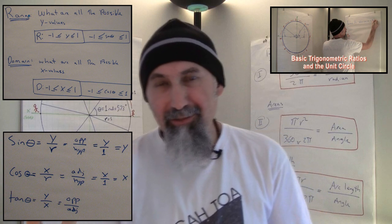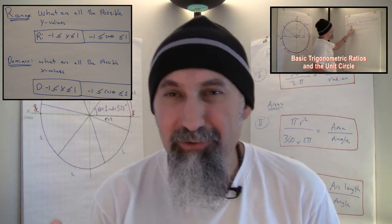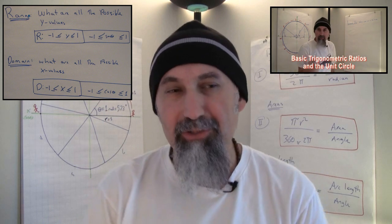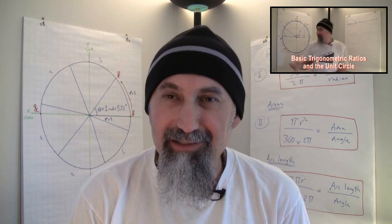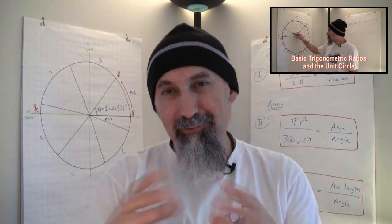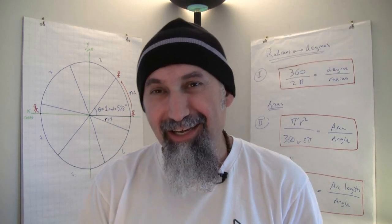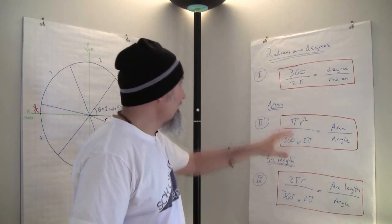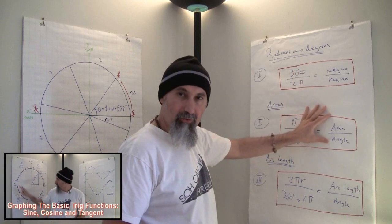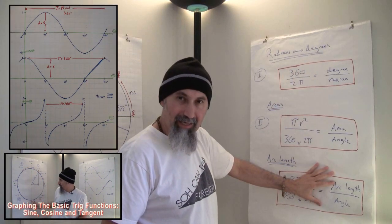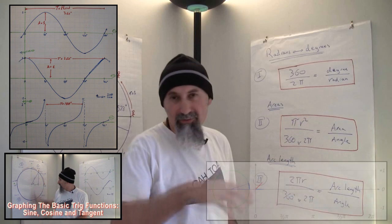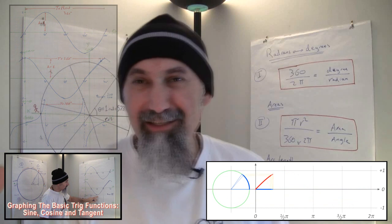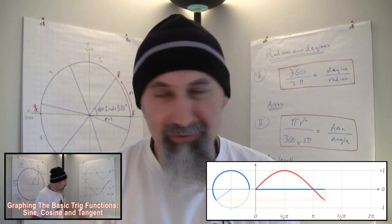Any circle with a radius of one unit we call the unit circle. We choose the number one because it's easily scalable and simplifies our calculations. From there, using the unit circle, we graphed the sine function, the cosine function, and the tangent function. Sine and cosine come out as beautiful curves — basically any wave you see is either a sine, cosine, or a combination of both.